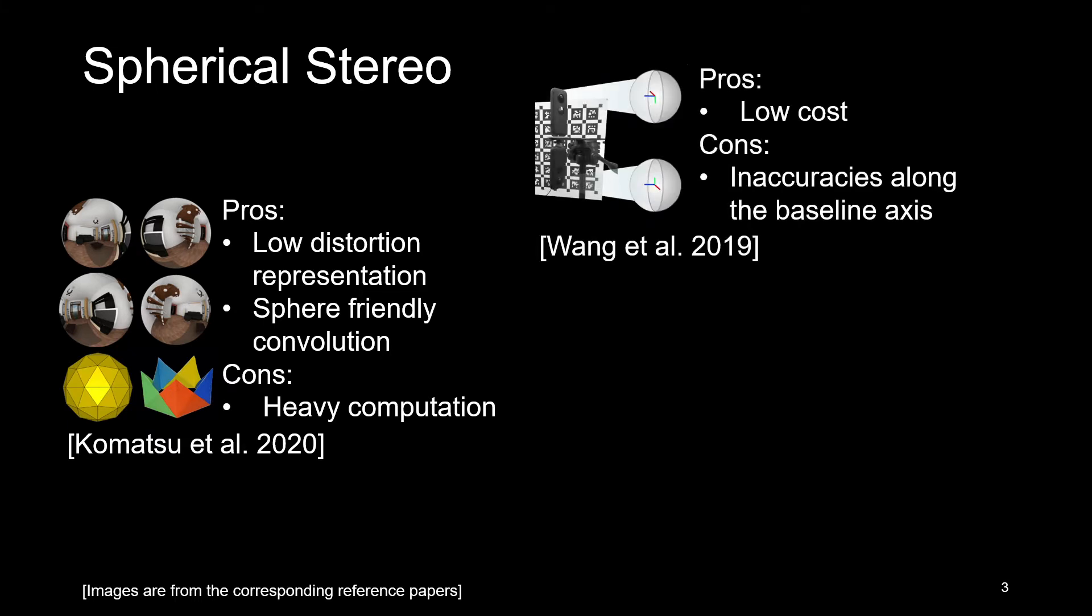360 SDNet proposes a low-cost, two-view stereo approach. However, their camera layout does not show any exploitable baseline in the camera alignment. This data-driven method's performance is also limited by the availability of real-world datasets.